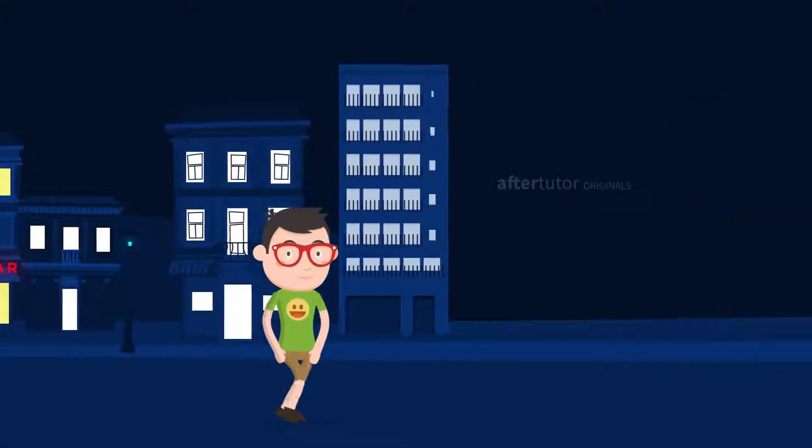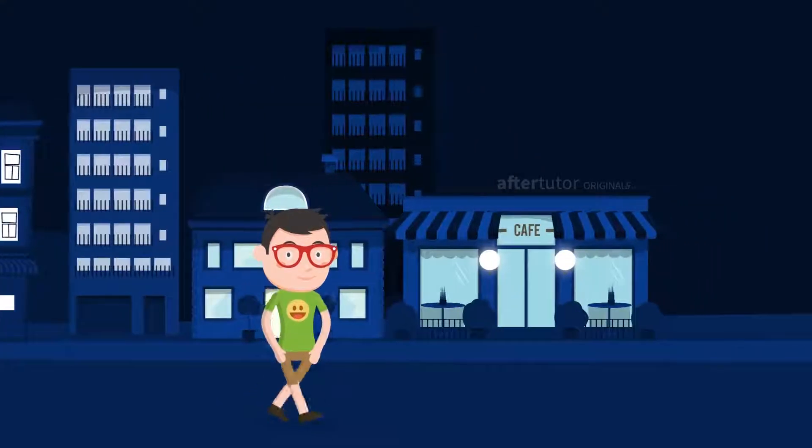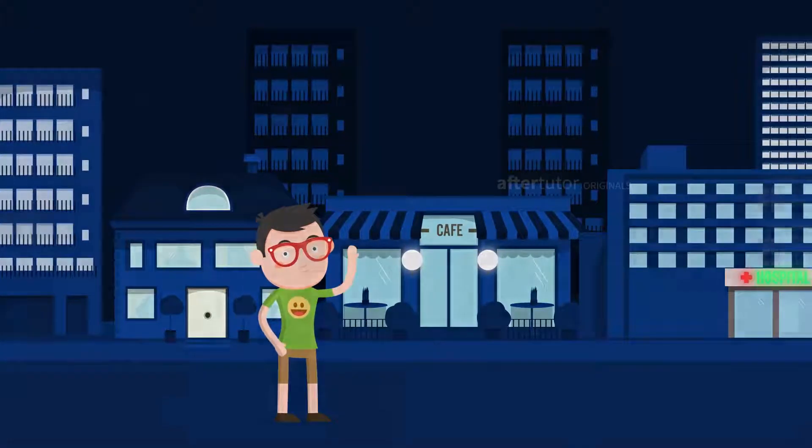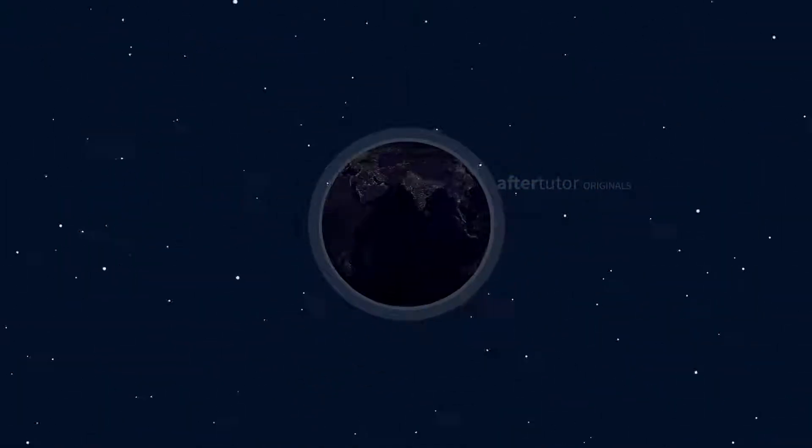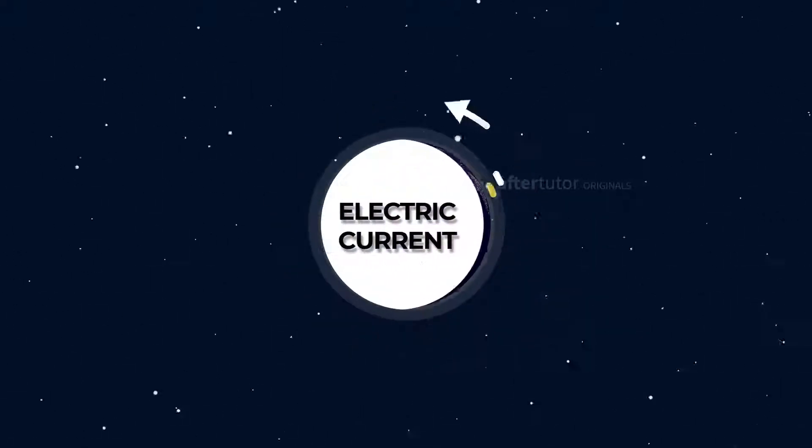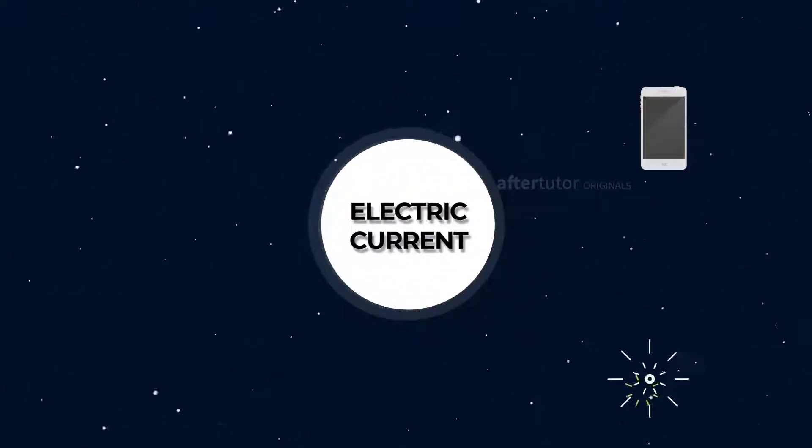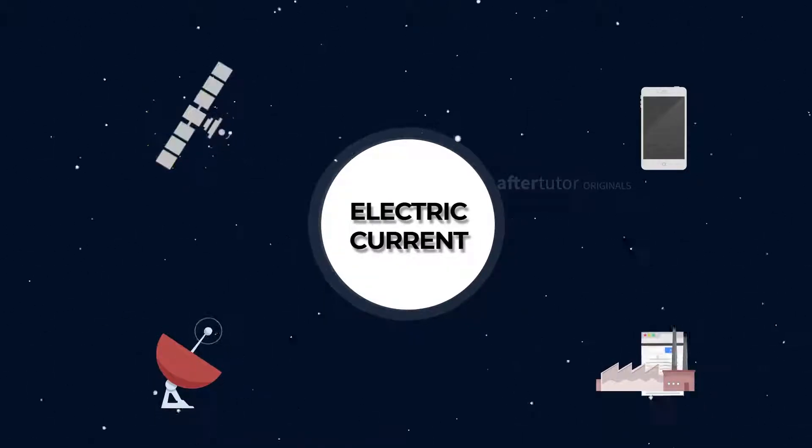As a result of this invention, abundant changes have taken place in the world over the years, and it changed our dark planet to the planet of lights. From the things that exist around us to the industries and other technologies, everything works on electricity.